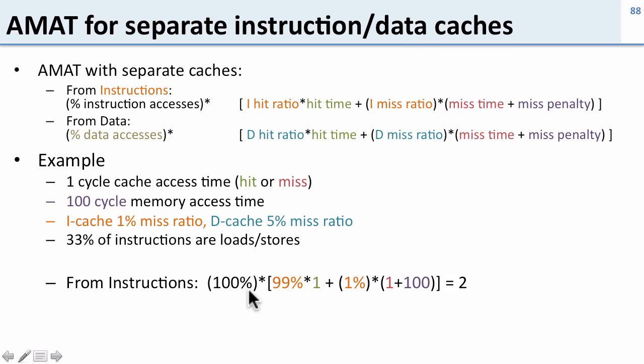From instructions, well 100% of instructions need to load an instruction because they're instructions. So 100% of them are going to access the cache, 99% of the time we hit, 1% of the time we miss, and when we miss it costs us this much.